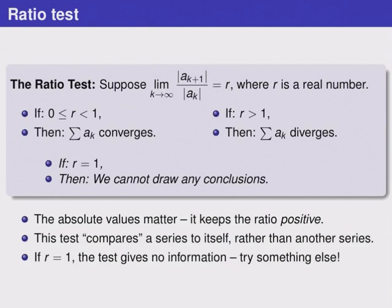The absolute values matter here. It keeps our ratio positive, which is important. This test effectively compares a series to itself. And if r equals 1, we truly do not get any information. We cannot draw any conclusions.